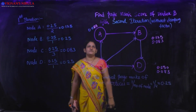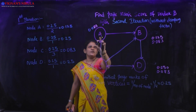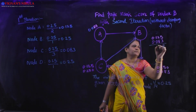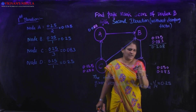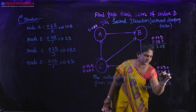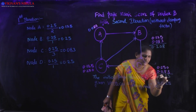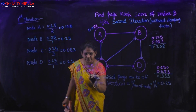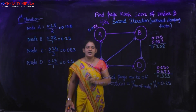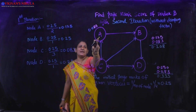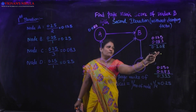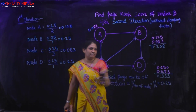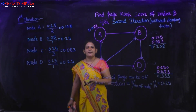After the first iteration, the page ranks are: page rank of A = 0.083, page rank of B = 0.208, page rank of C = 0.375, and page rank of D = 0.333.